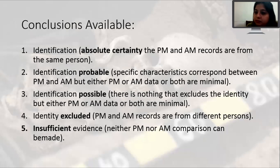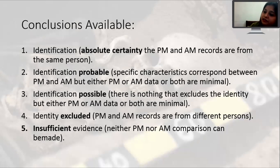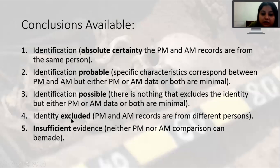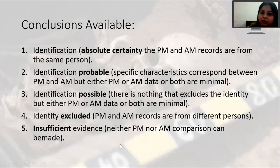Per Interpol guidelines, five conclusions are possible in comparative dental identification: (1) Identification is absolutely certain — ante-mortem and post-mortem data match from the same person; (2) Identification is probable — characteristics correspond but data are minimal; (3) Identification is possible — no unexplainable discrepancy exists between ante-mortem and post-mortem data; (4) Identity is excluded — a definite conclusion that it is not this person; (5) Insufficient evidence — lack of adequate ante-mortem or post-mortem records prevents a conclusion.